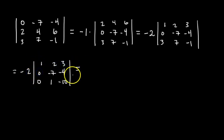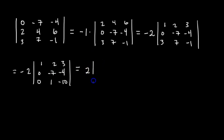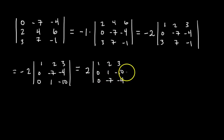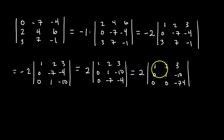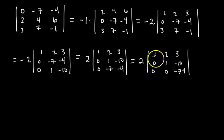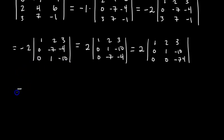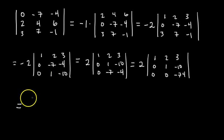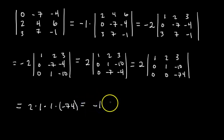To avoid fractions, swap rows two and three, which multiplies by negative one — changing negative 2 to positive 2. We get [1 2 3 / 0 1 -10 / 0 -7 4]. Then do row three equals row three plus seven times row two — a row replacement, so the 2 stays. Now the matrix is in upper triangular form. The full determinant is 2 times the product of the diagonal: 2 × 1 × 1 × (−74) = −148.